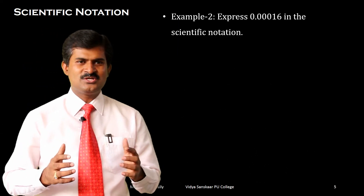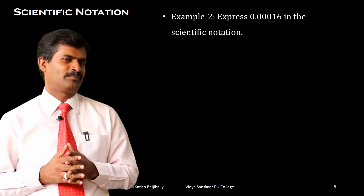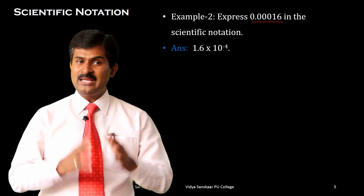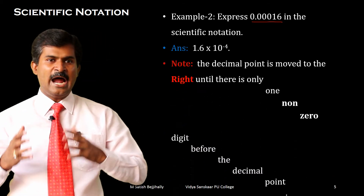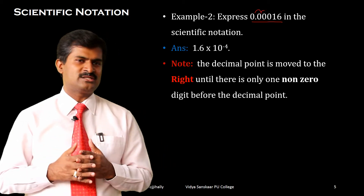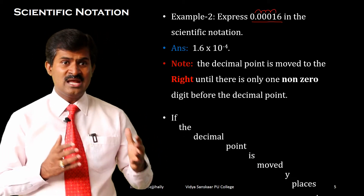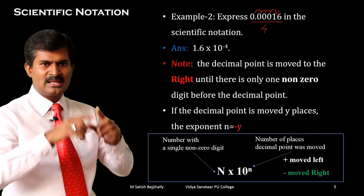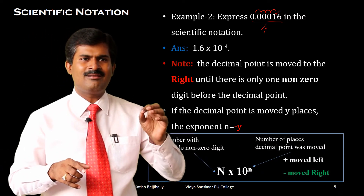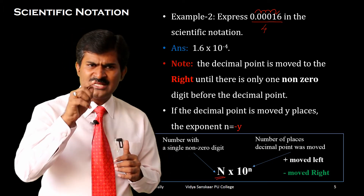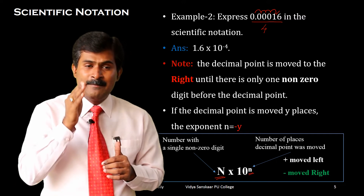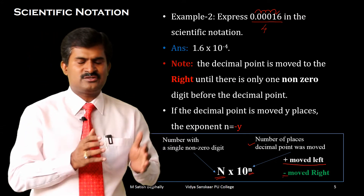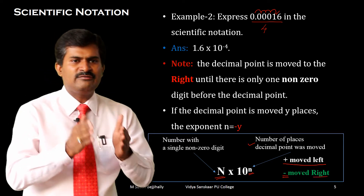Let us take example number 2: express 0.00016 in scientific notation. The answer will be 1.6 into 10 to the power of minus 4. The decimal point is moved to the right until there is only one non-zero digit before the decimal point. If the decimal point is moved y places, the exponent value n equals y. To summarize: capital N is the number with a single non-zero digit; small n is the number of places the decimal point was moved. The value of n is positive if the decimal point is moved to the left, and negative if moved to the right.